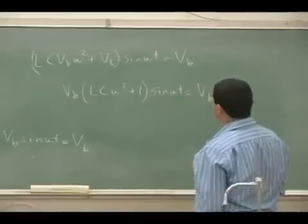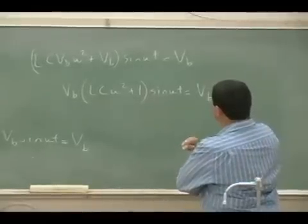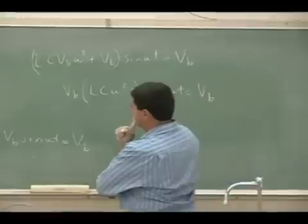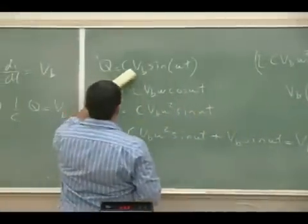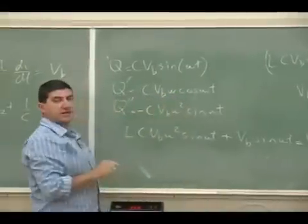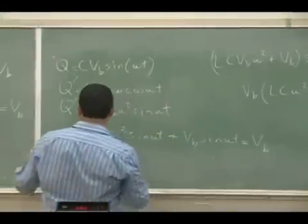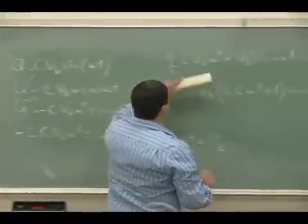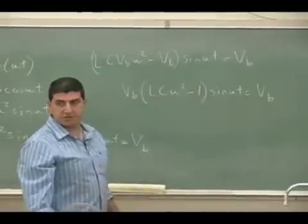Correcting the sign: the derivative of sine is cosine, and the derivative of cosine is negative sine — so there's a negative sign on the second derivative term. Factoring out the sine, we get a negative term here and a negative term there. For the equation to have no time dependence, this coefficient must equal zero. Therefore, L*C*omega² equals 1, which gives us the natural angular frequency of the LC circuit.